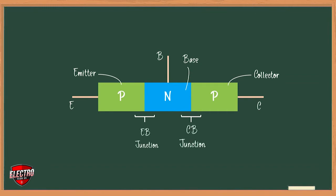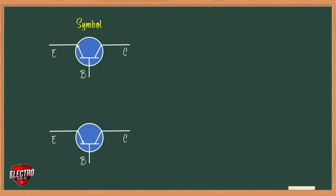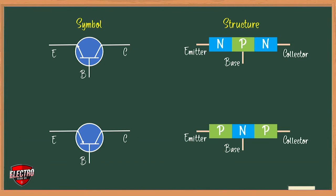The symbols employed for NPN and PNP transistors are shown in the figure. The arrow is always at the emitter, not at the collector, and in each case its direction indicates the conventional direction of current flow.